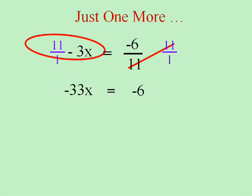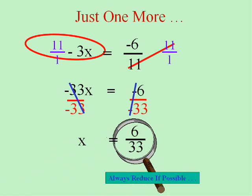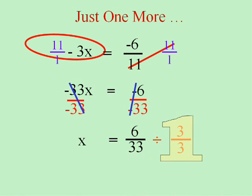I'm going to get x alone by dividing by negative 33 and canceling, and I get x is 6 thirty-thirds. Don't forget, a lot of these answers are going to be fractions, so you'll always have to reduce a fraction if you want full credit. I'll divide top and bottom by 3, and the answer, the final answer, is 2 elevenths. Pretty cool, huh?